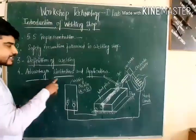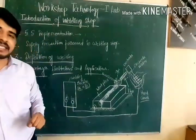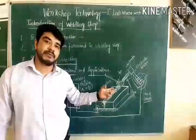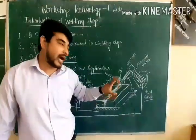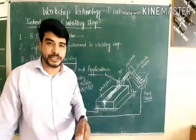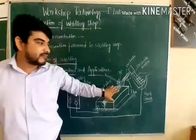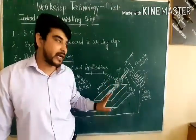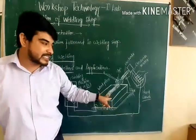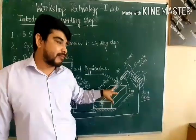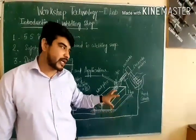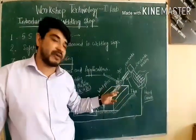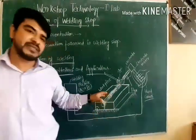Now we discuss the advantages, limitations, and applications of welding. The advantages of welding include: the welded joint is capable of bearing high loads, even compared to a riveted joint. Welding can also be used for repair purposes — if two pieces are broken, we can repair them rather than taking a new piece. This saves base metal, reduces material costs, reduces labor costs, and overall production is improved. The efficiency of a welding joint is also good.